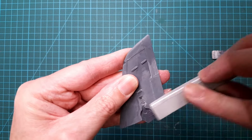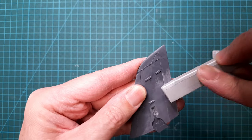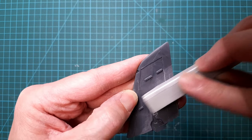Using CA glue would have been much faster for small areas like this, but I will rescribe the panel lines, so I prefer to use liquid sprue here.